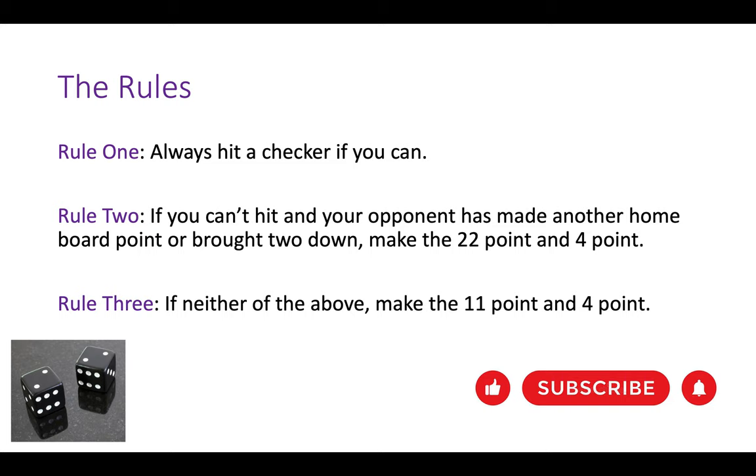Rule number two, if you can't hit and your opponent has made another homeboard point or brought two down and is threatening to prime you, make the 22 point and the 4 point. Do not get stuck back and have lower flexibility and be trapped behind a prime or a blitz.